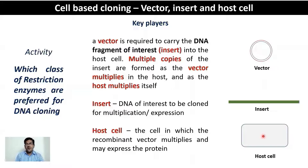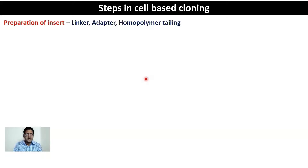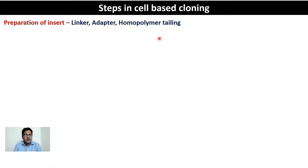In a cell-based cloning system, it is the nature of the insert that defines which vector and which type of host cell to use. The first step is the preparation of the insert. Sticky-end or staggered-end ligation is a lot easier and more efficient than blunt-end ligation. Linkers, adapters, and homopolymer tailing are some methods you can use to introduce staggered ends onto a blunt-end insert.